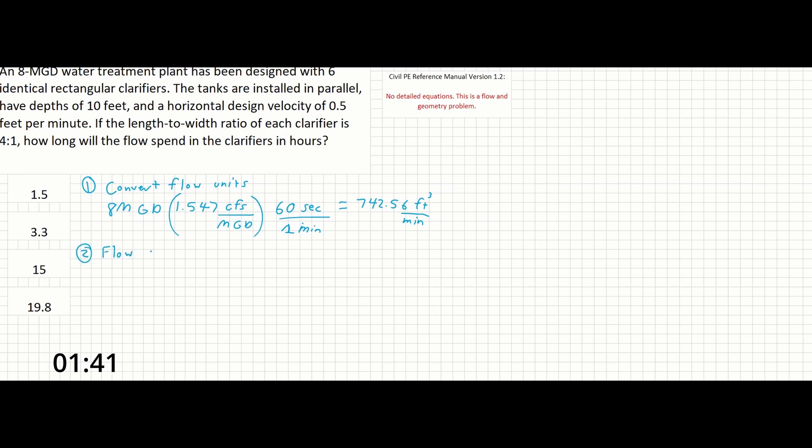Next we can find the amount of flow in each clarifier. This is straightforward. If we have 742.56 cubic feet per minute in all of the clarifiers,